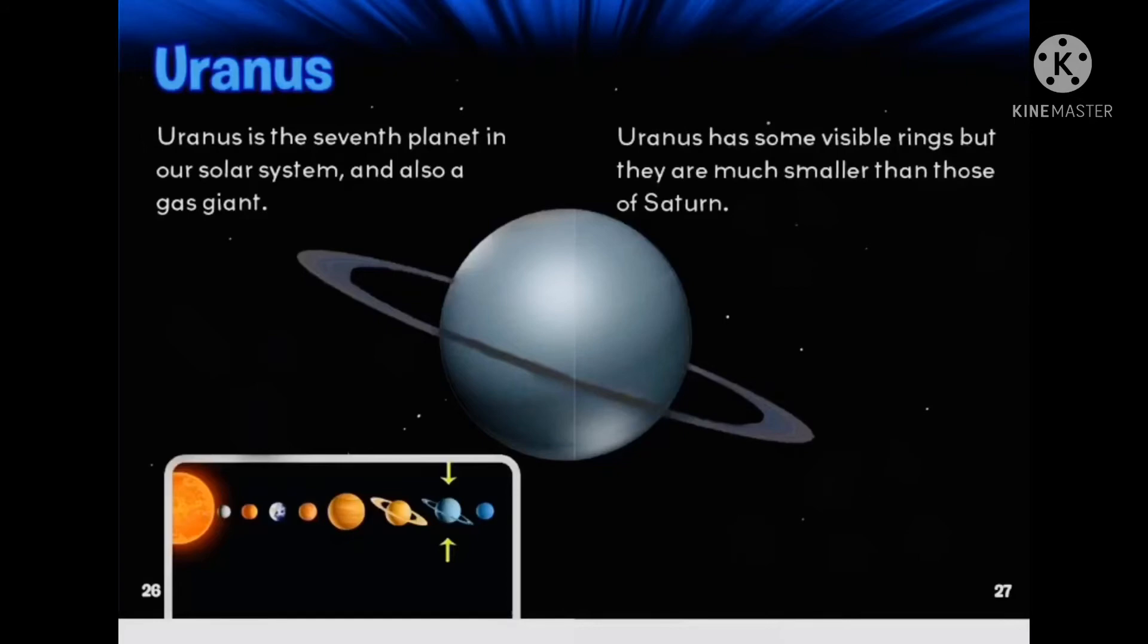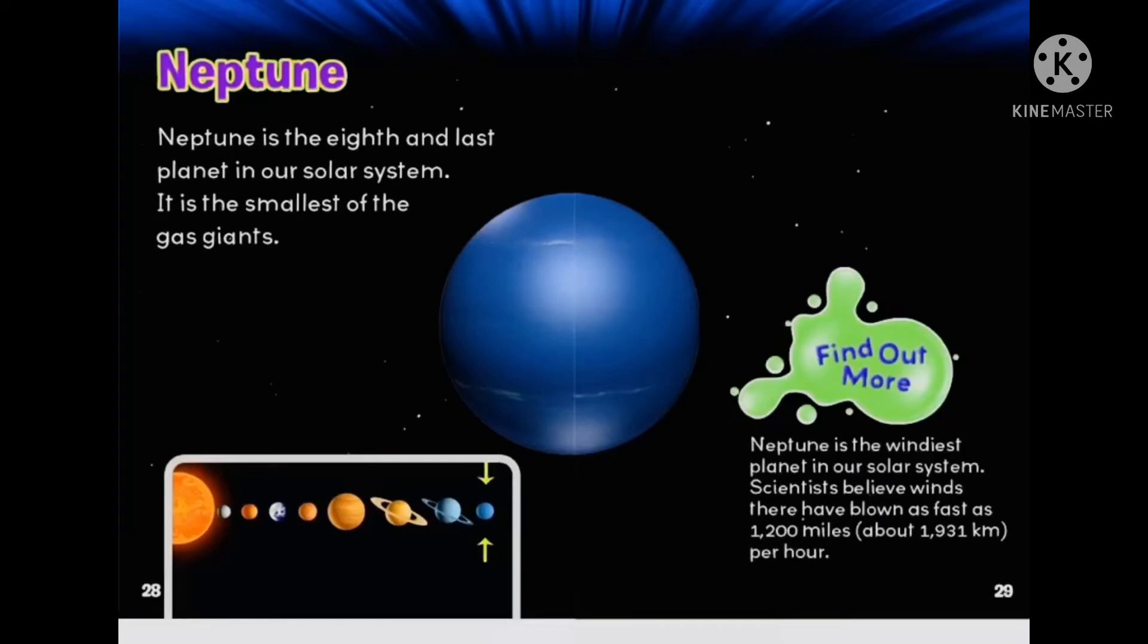Neptune. Neptune is the eighth and last planet in our solar system. It is the smallest of the gas giants. Neptune is the windiest planet in our solar system. Scientists believe winds there have blown as fast as 1,200 miles.